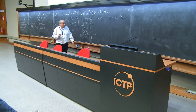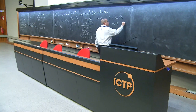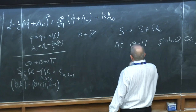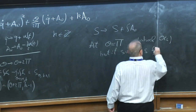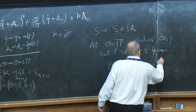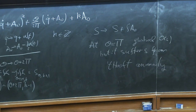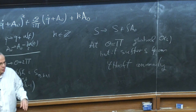What we see here is that at θ=π, there is a global O(2) symmetry, but it suffers from a 't Hooft anomaly. It's really nice that this elementary free quantum mechanical system exhibits such a subtle phenomenon. Later in the series of lectures, I'll use the same understanding in more complicated systems which cannot be analyzed so easily.